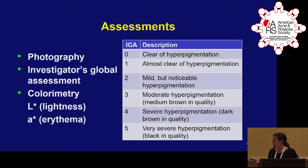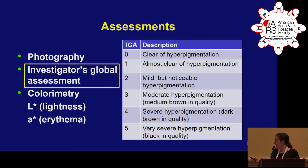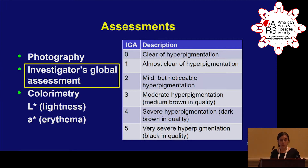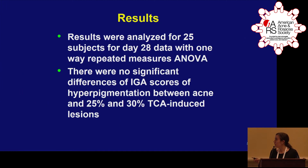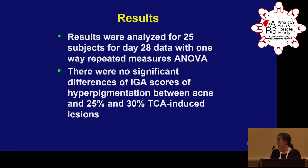In terms of IGA scores, investigators scored each lesion from 0 to 5, with 0 being clear of hyperpigmentation and 5 being very severe, almost black hyperpigmentation. When we analyzed the data at day 28 using one-way repeated measures ANOVA, we found no significant differences in IGA scores of hyperpigmentation between acne and 25% and 30% TCA-induced lesions.